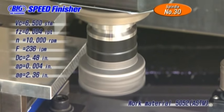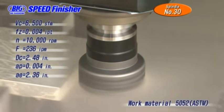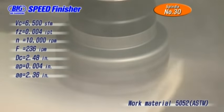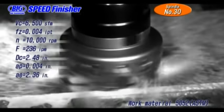The machine has a Big Plus BT-30 spindle. The work material is 5052 steel. The cutting speed is 6,500 feet per minute. The feed rate is 0.004 inch per tooth with an axial depth of cut of 0.004 inch.